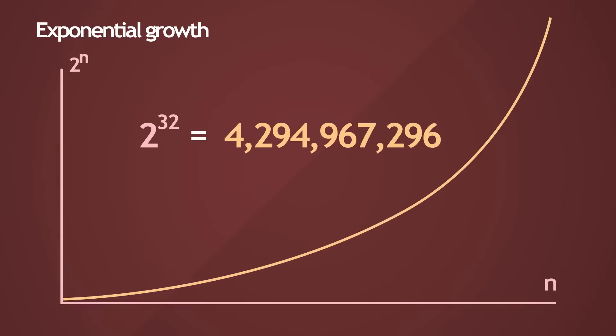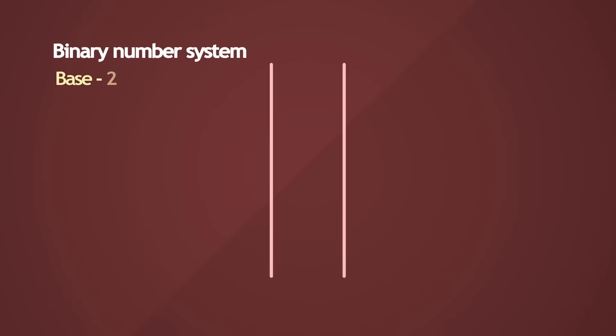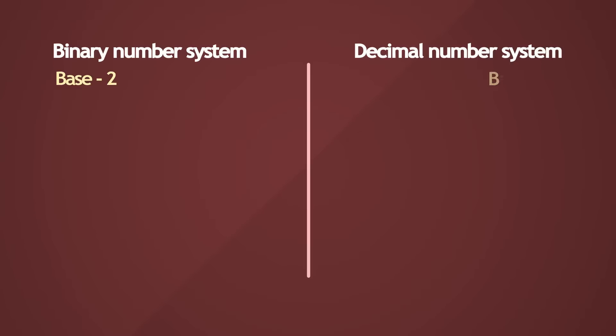I'm not gonna delve too deep into binary representation or binary arithmetic here, but I'm gonna try and draw some parallels between the binary number system, or the base 2 number system, and the system that we're most accustomed to, the decimal number system, or the base 10 number system.